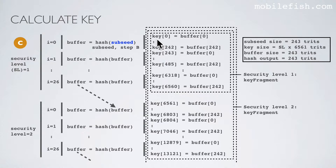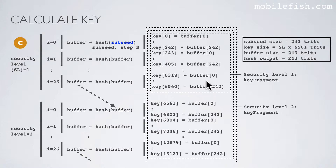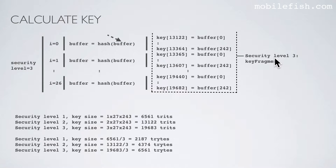If you use security level 1, your key size range is from 0 to 6,560. If you use security level 2, your key size range will be key 0 to key 13,121. If you take this buffer array, you assign it to the key array in this manner. The key index range 0 to 6,560 is called the key fragment. For security level 2, the key fragment range is key index 0 to 13,121. For security level 3, the key fragment range is key index 0 to 19,682. For each security level 1, 2, and 3, you can find the corresponding key sizes in trits.